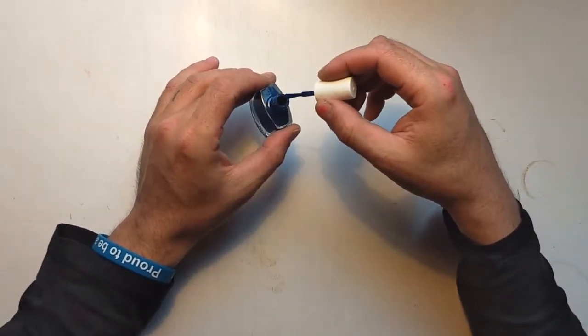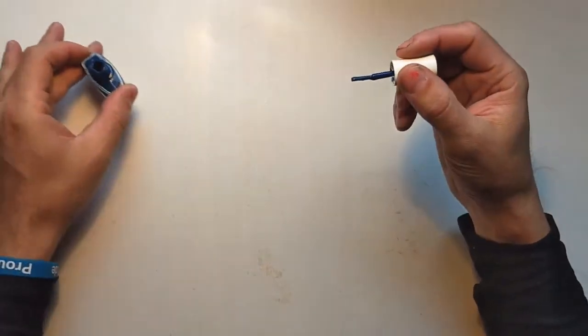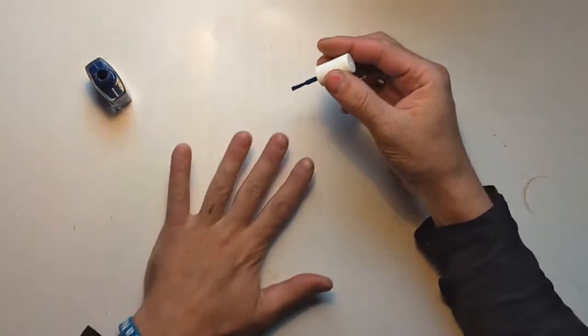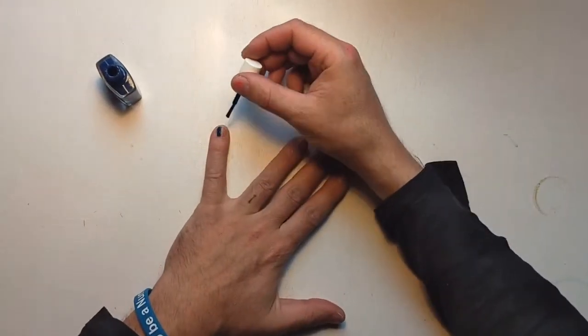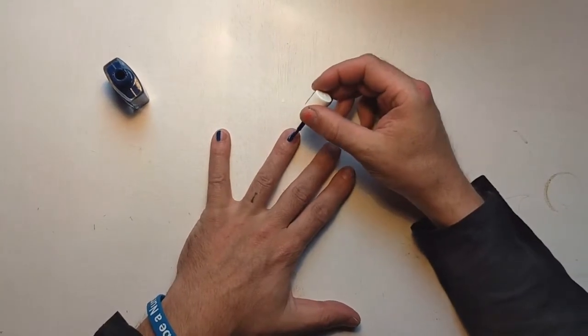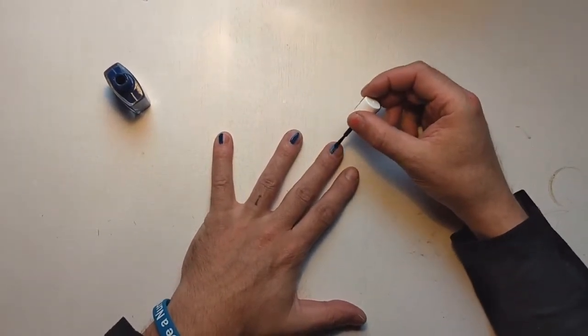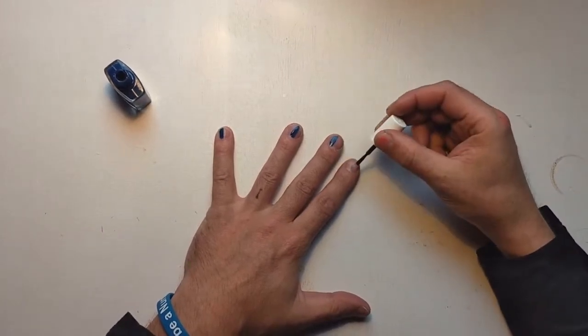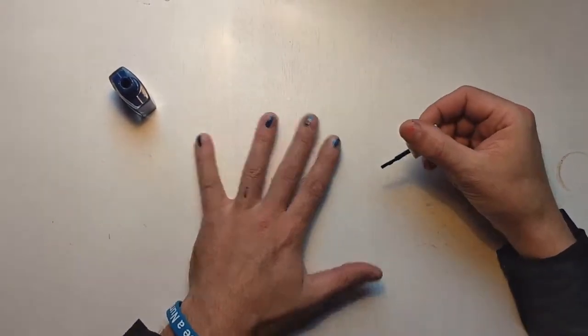We will start with blue. Take some blue, wipe off the brush not to take too much, and apply it randomly to your fingers. Don't put it everywhere, we still need some space for the other colors.